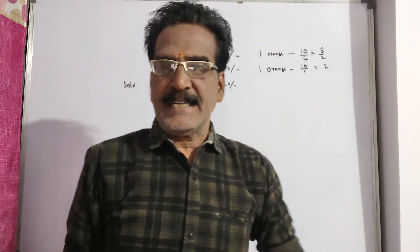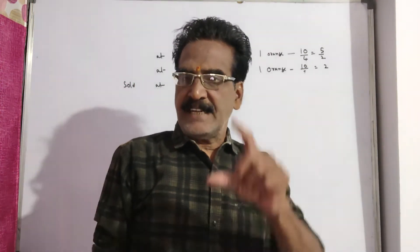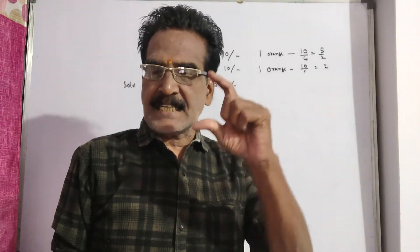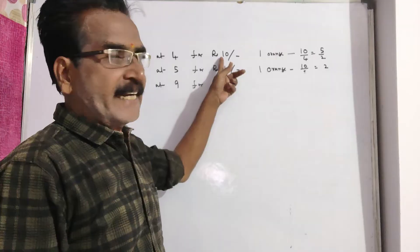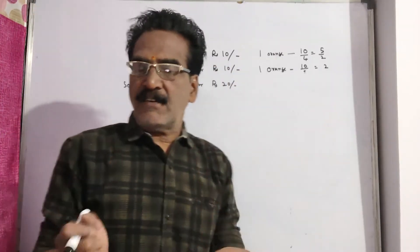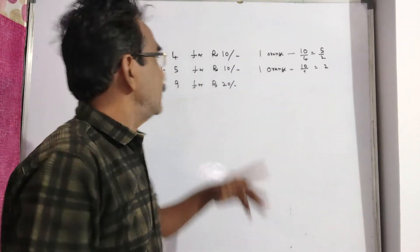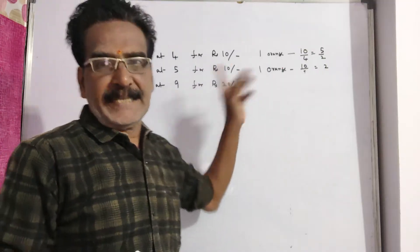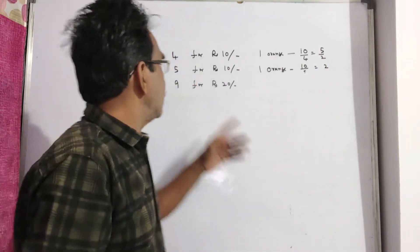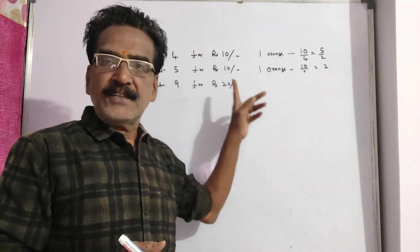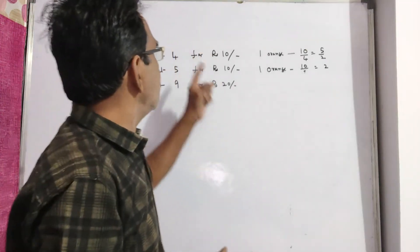Hi friends, good morning. Please look at the next problem in profit and loss. Friends, a fruit seller buys a certain number of oranges at 4 for rupees 10 and an equal number more at 5 for rupees 10. And he sells the whole lot at 9 for rupees 20. What is his gain or loss percent?